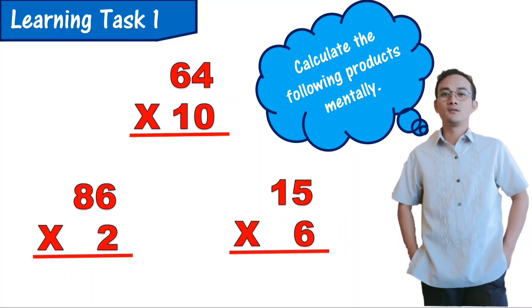Calculate the following products mentally: 64 x 10, 86 x 2, and 15 x 6. 64 x 10 equals 640. 86 x 2 equals 172. 15 x 6 equals 90.